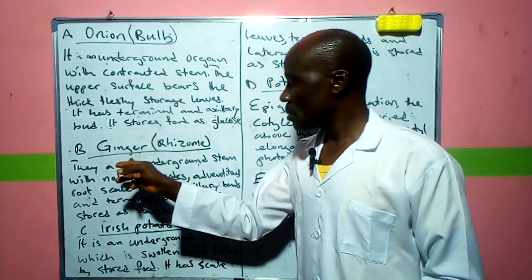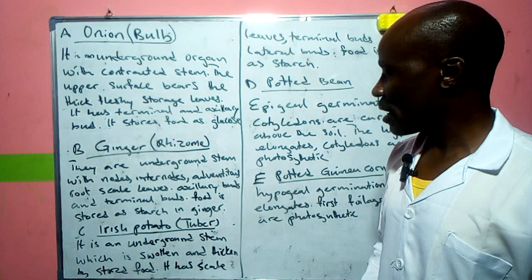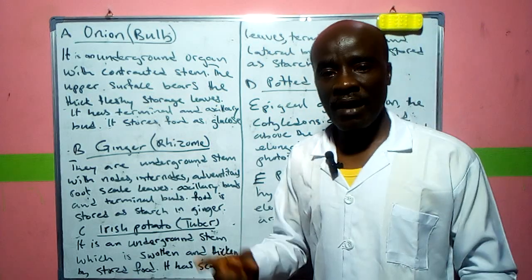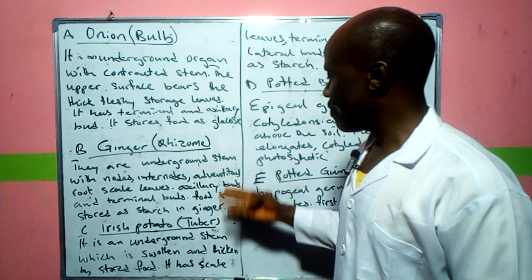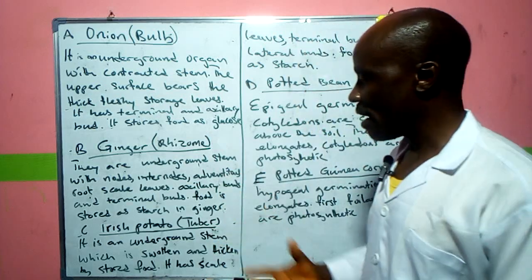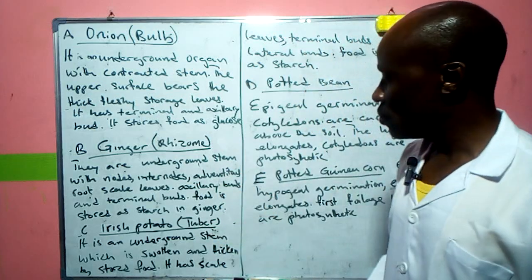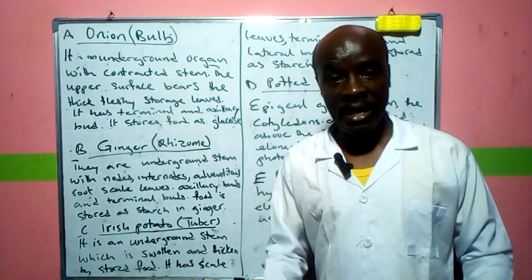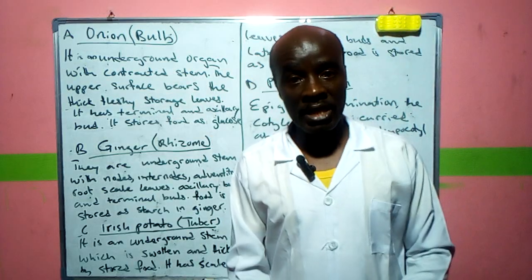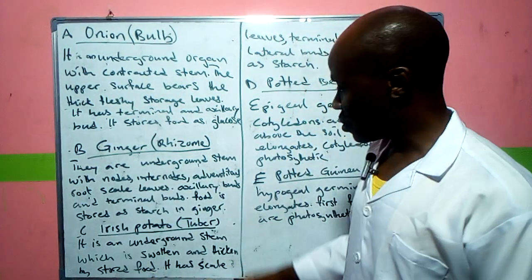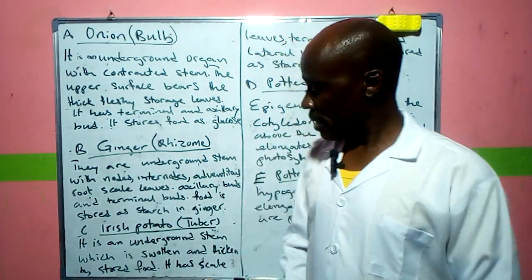Ginger is also an underground stem. Underground stems have nodes and internodes, adventitious roots, a scale leaf, terminal buds, and auxiliary buds. The food in ginger is stored as starch.